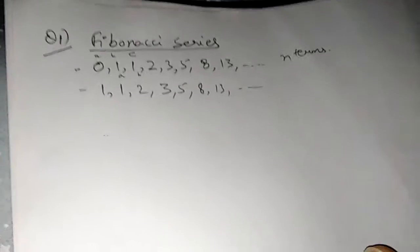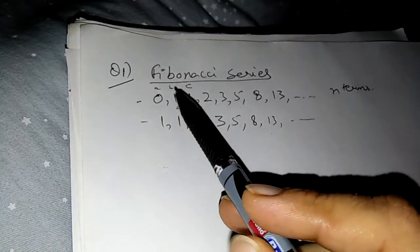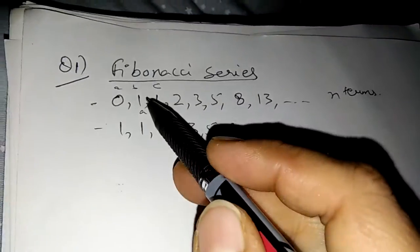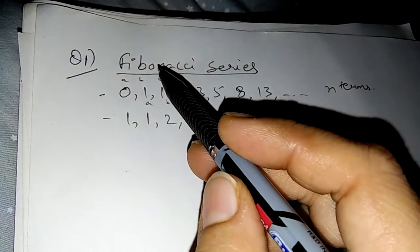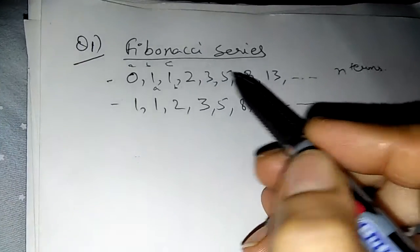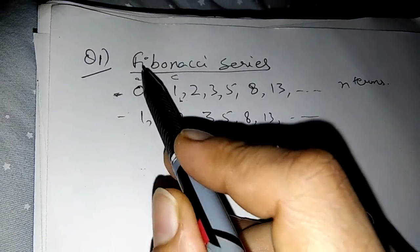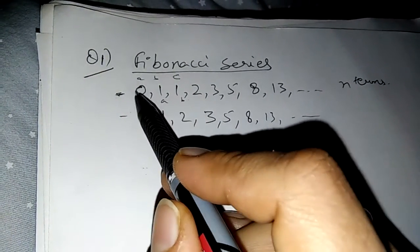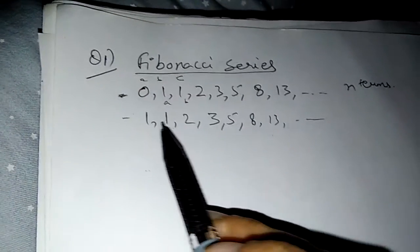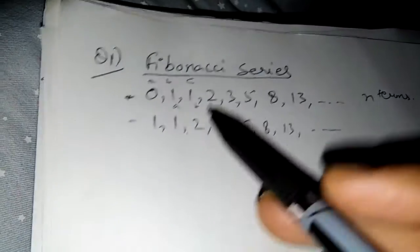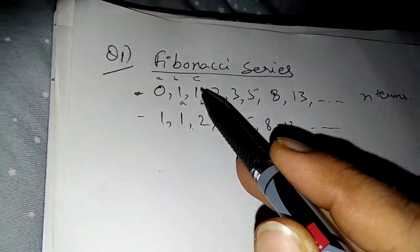Hello friends, I am here to teach you about the Fibonacci series. Fibonacci series, as we all know, in programming it creates a problem for us, but it is very easy. Now I'm discussing it today. I will tell you how to make a program on Fibonacci series. There are two types of Fibonacci series you will find: where the first term is 0 and 1, or the first and second terms are 1 and 1.